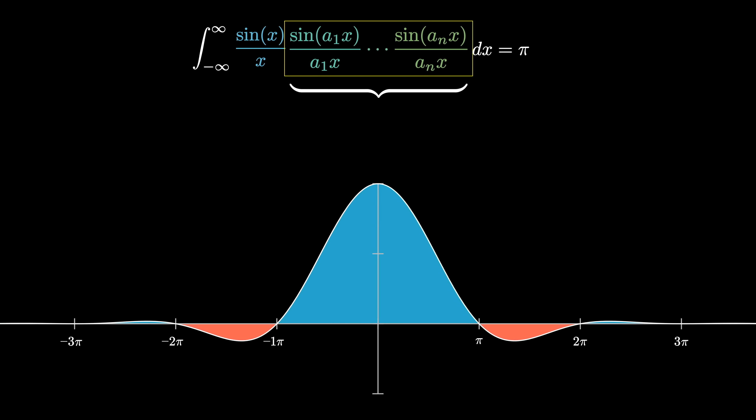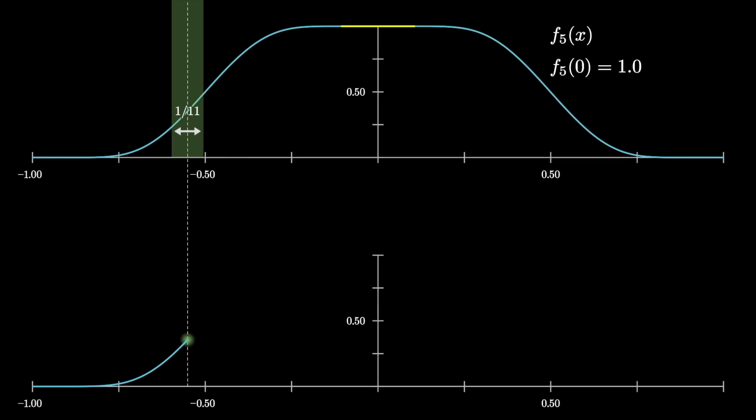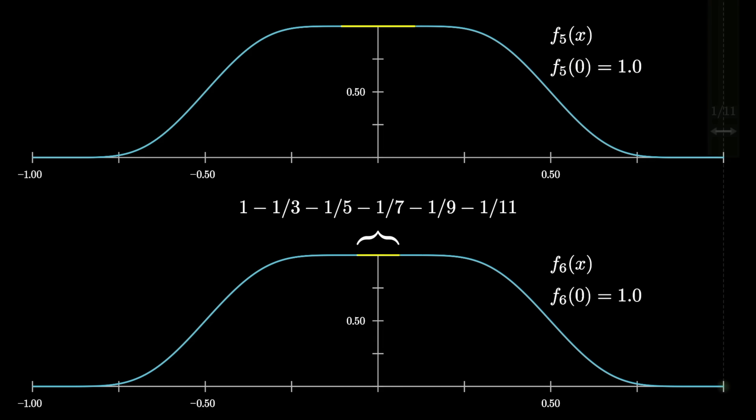More generally, we could be inserting any sequence of positive numbers into those sinc functions, and as long as the sum of those numbers is less than 1, our expression will equal pi, but as soon as they become bigger than 1, our expression drops a little below pi. And, if you believe me, that there's an analogy with these moving averages, you can hopefully see why.